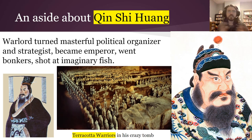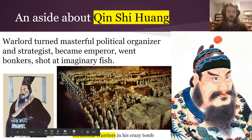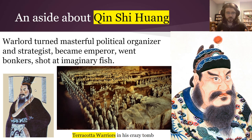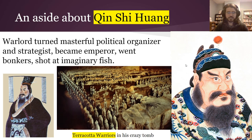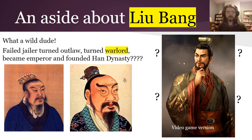An aside about the guy who did the unifying: Qin Shi Huang. He was a warlord turned masterful political organizer and military strategist. He became emperor and unified China for the first time — you can see a really impressive picture down here. Then he decided he wanted to be immortal, probably had some mental health issues, started taking mercury, which really worsened those, and died on his way back from an adventure to shoot at imaginary fish. You can see his crazy tomb with terracotta warriors — human person-sized — look at how many there are with all the horses. He really lost it at the end, and that's one of the reasons the Qin Dynasty collapsed. They were super strict and led by not-so-great rulers, so they only lasted 14 years.